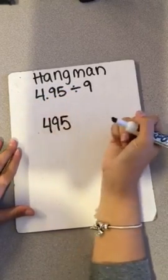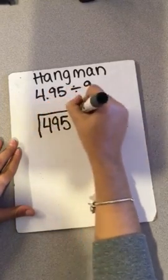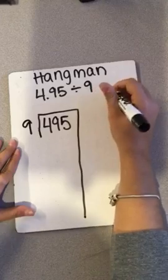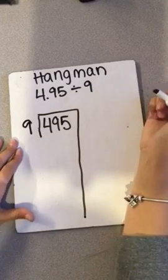So you have 495 divided by 9. And you always make a bank of facts over to the side that we can use.